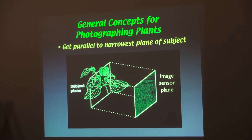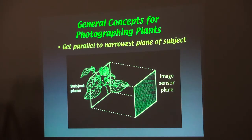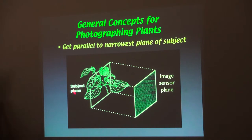I can't emphasize this enough: your image sensor plane is flat. Depth of field gives you a certain amount of subject in focus. If the plane of the subject is narrow, then you can get by with a lot less depth of field, which means the background is more controllable. Beautiful backgrounds.